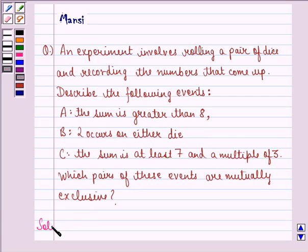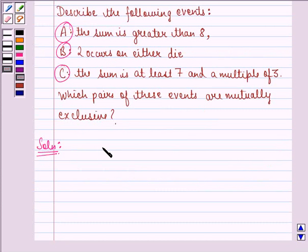Let us see the solution to this question. First of all, let us find out the sample space for the events A, B and C. But first of all, we see that if a die is thrown, it can turn up 1, 2, 3, 4, 5, 6.